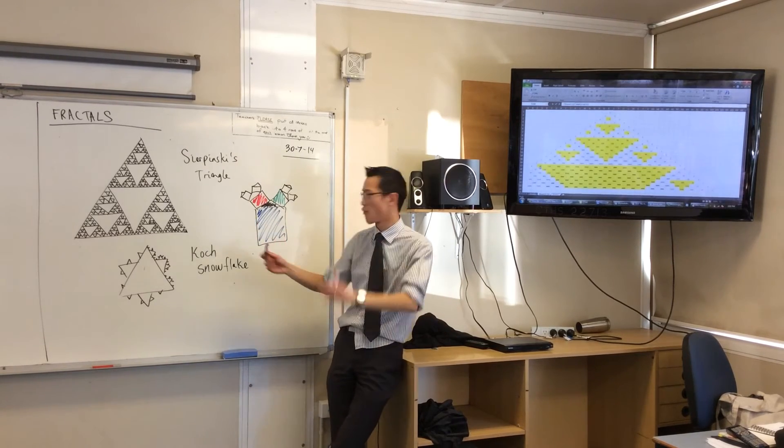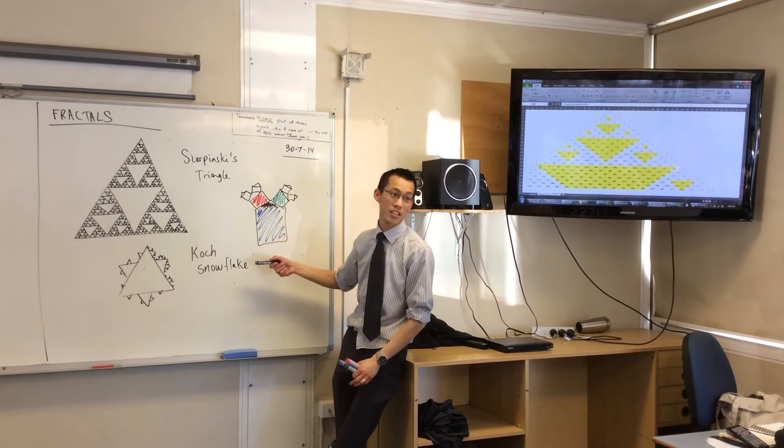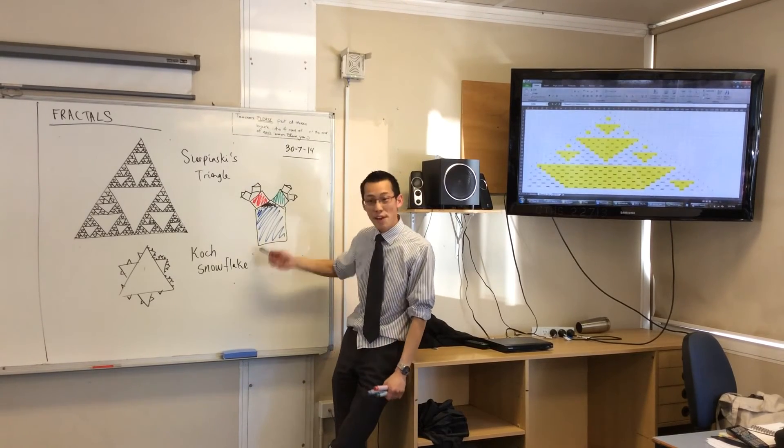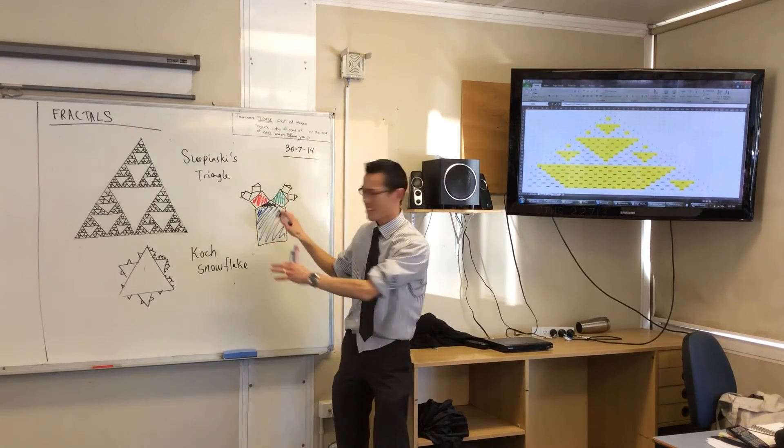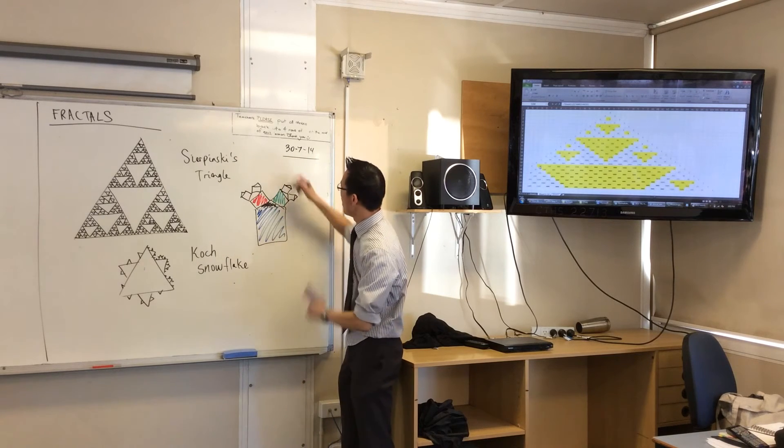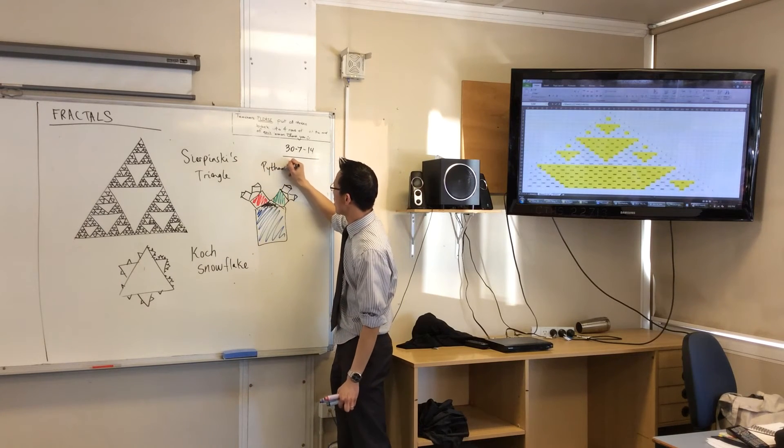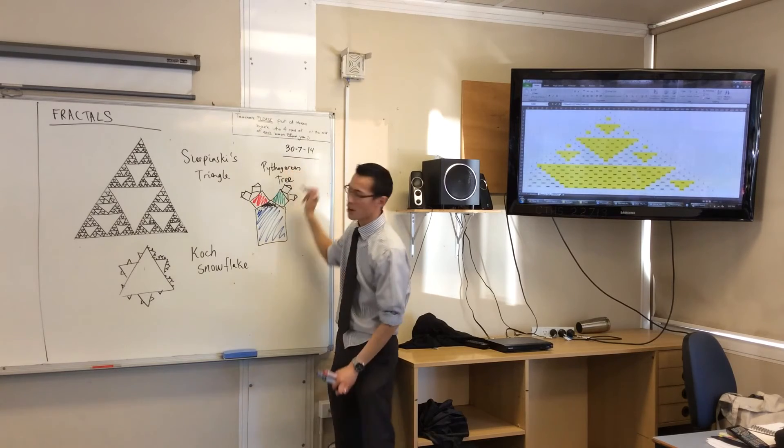Like, you can cut up these shapes, and you can rearrange the two small ones to fit into the big one, okay? So, therefore, this thing, and if you keep going, it starts to look like the leaves of the tree, it's called the Pythagorean tree, okay?